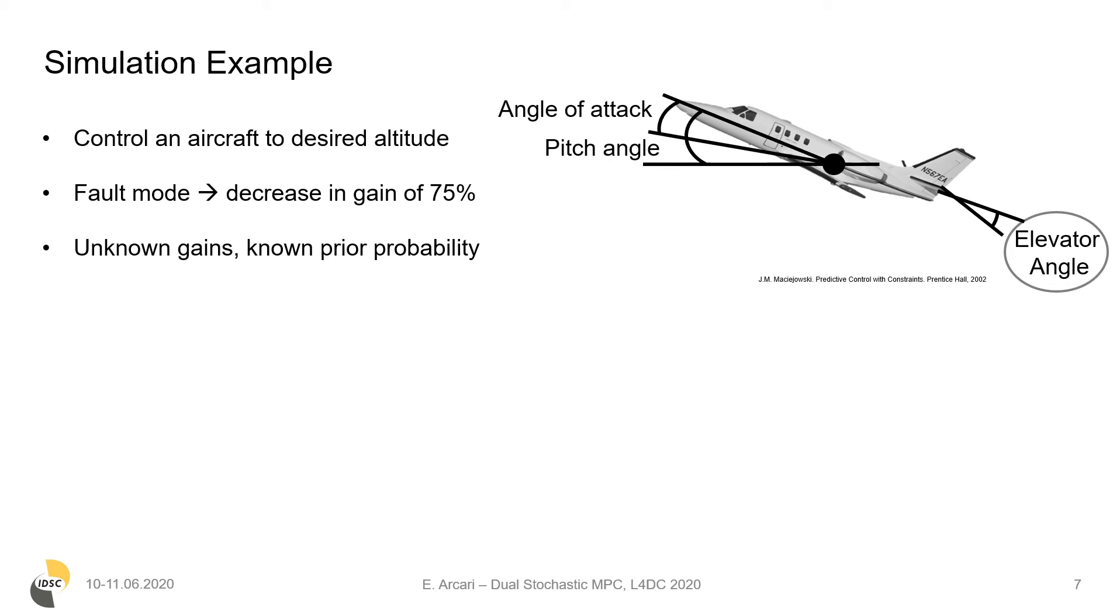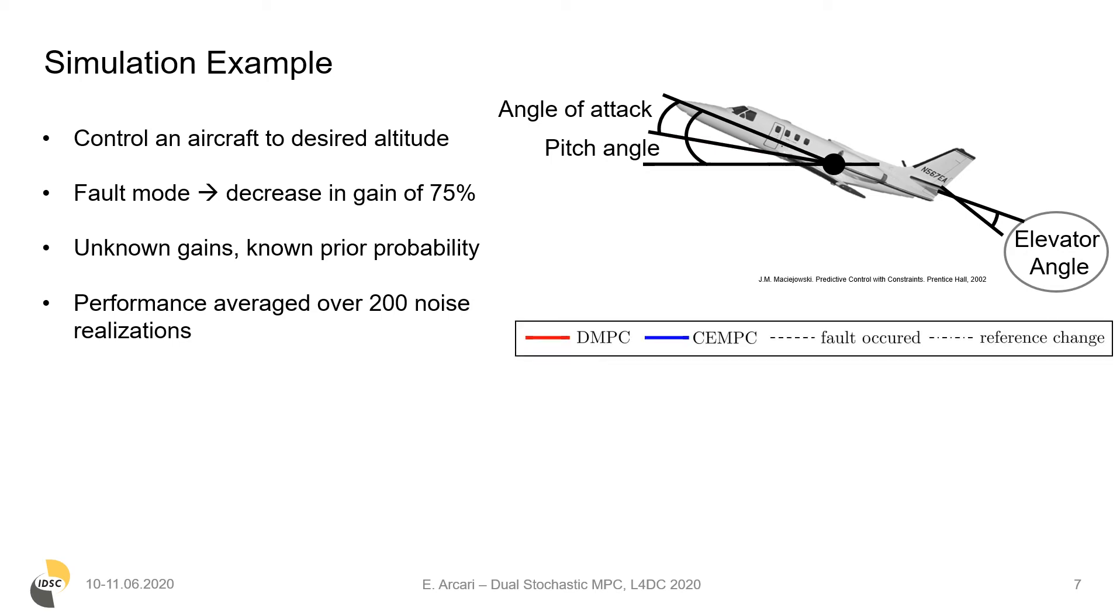The results provided hereafter are averaged over 200 noise realizations. And we provide results for our dual MPC in red compared to a certainty equivalence MPC in blue, where the first dashed line corresponds to when the fault occurs at k equal to 20 and the second dashed line to the reference change at k equal to 60.